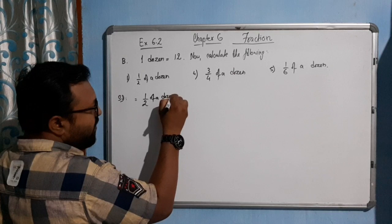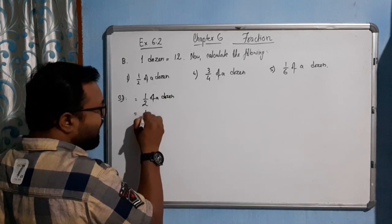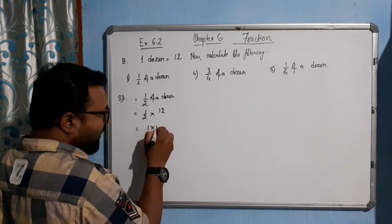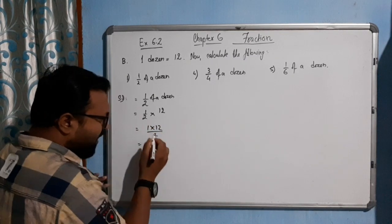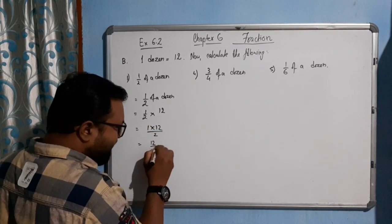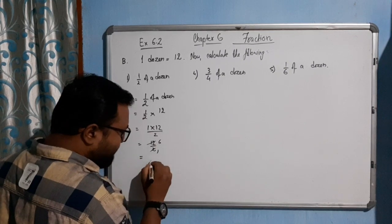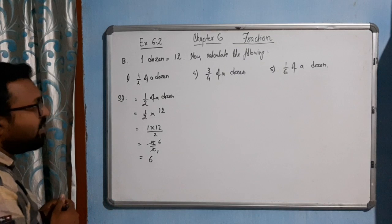Okay, it means half into 12. It means 1 into 12 by 2. Simply I would like to write like this: 12 by 2. 2, 1, 0, 2, 2, 6, 0. So 6, is that clear?